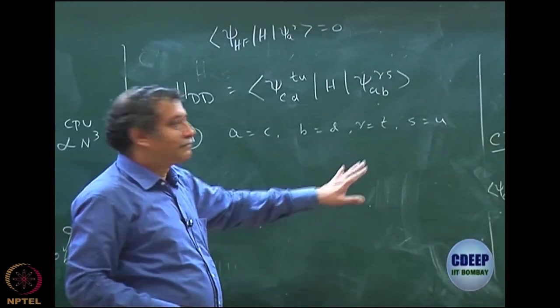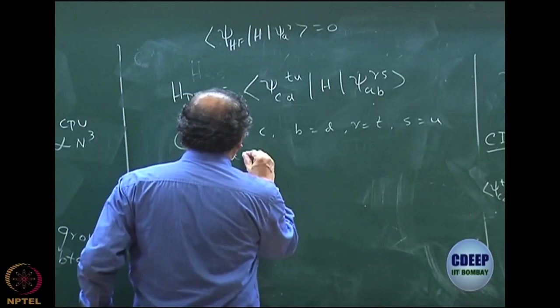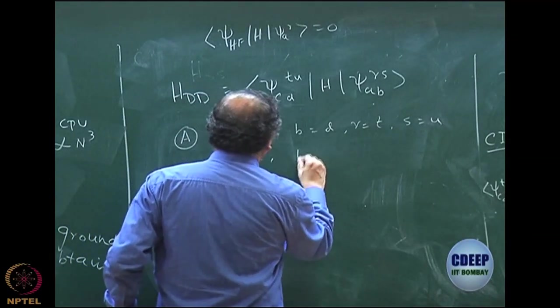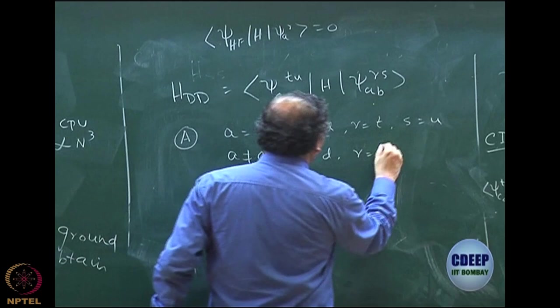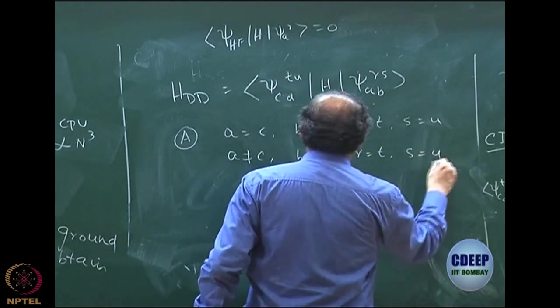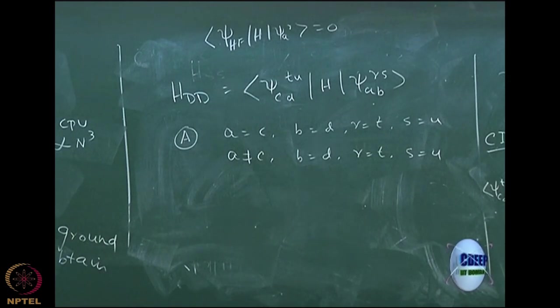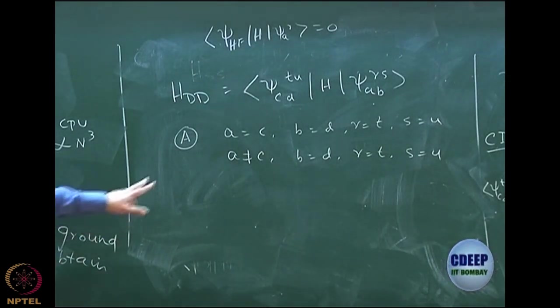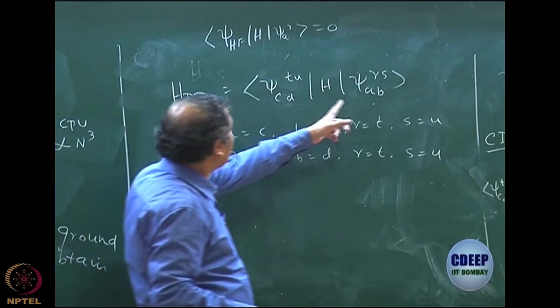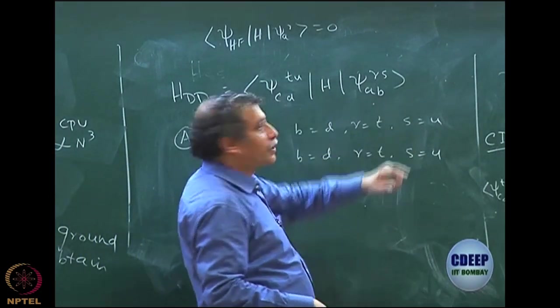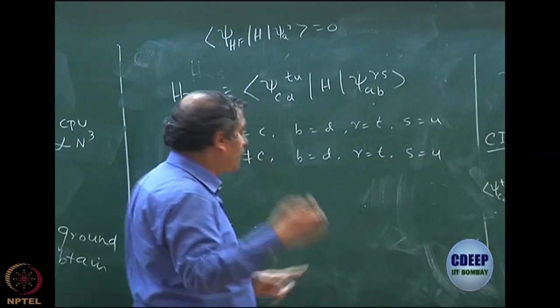I can keep on changing, maybe A is not equal to C, but B equal to D, R equal to T, S equal to U. Which rule you will apply? Rule B. A is not equal to C, but B is equal to T. Everything else is equal. Rule B, only one occupancy difference.